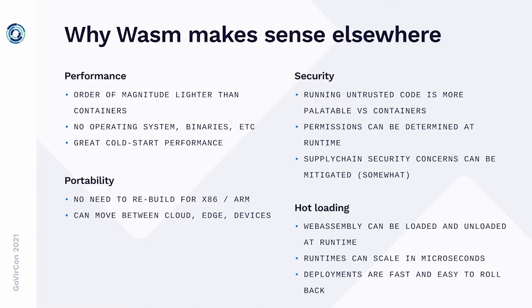Hot loading on the server means you can swap out a WebAssembly module without needing to stop a host process, drop network connections, or stop serving HTTP requests. This is really useful when deploying or rolling back code in cloud environments. If done correctly, you can continue serving requests with old versions, then immediately start using new versions once the swap has completed — all in a very clean way.